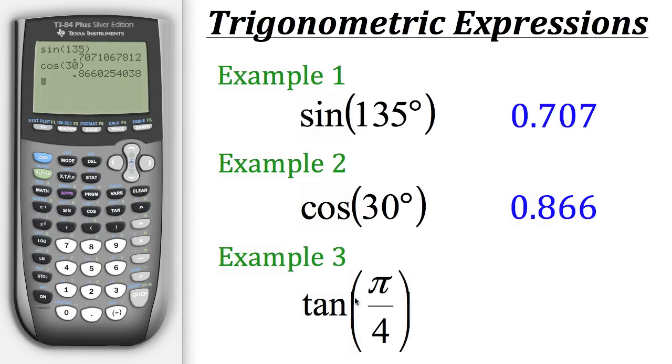Now let's try one more example. This time we want to find the tangent of pi over 4. In this case, our angle is not being measured in degrees anymore. Before we evaluate this, let's change our mode to radians. We'll go to mode, scroll down to radians, and hit enter.